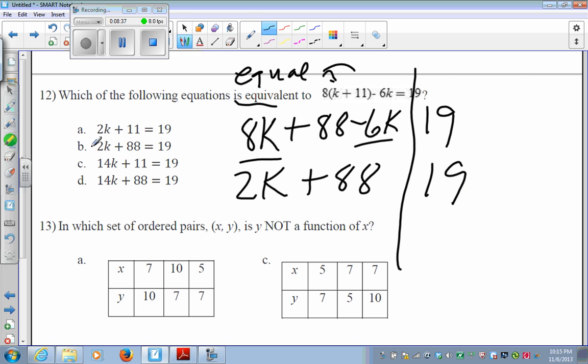Lo and behold, look right here. I've got 2k plus 88 is equal to 19. So, this one is an equivalent form of my equation. If you picked a in the previous test, when you did your distributive property, you just forgot to do the 8 times 11 as well as the 8 times k. If you picked these 14s, likely what you probably did is you added 8k plus 6k instead of subtracting them. So, that's why you should have chosen B.